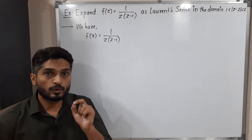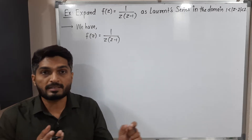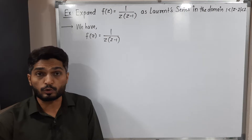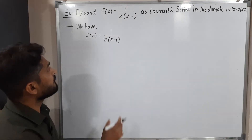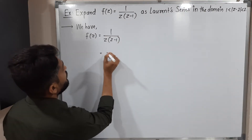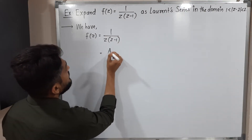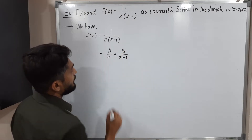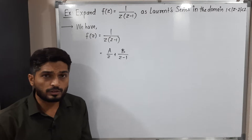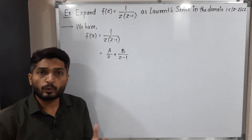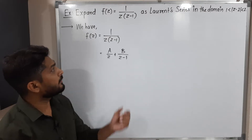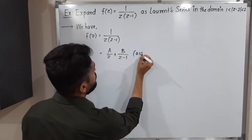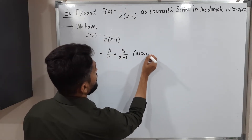In the denominator we have two terms, z and z-1, so our first task is to make them separate using partial fractions. We assume we can write this as A/z plus B/(z-1), where A and B are constants whose values we need to find.